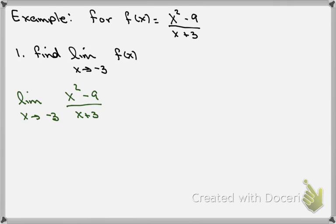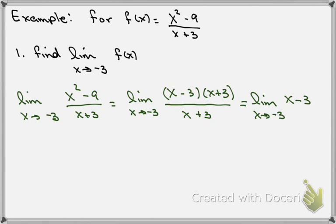If we simply plug in -3, we'll see that we get 0/0, which is an indeterminate form. So we know we're going to have to use some other technique. We're going to factor that numerator. Once we factor that numerator, the (x+3) terms cancel. Now I have the limit as x goes to -3 of (x-3).